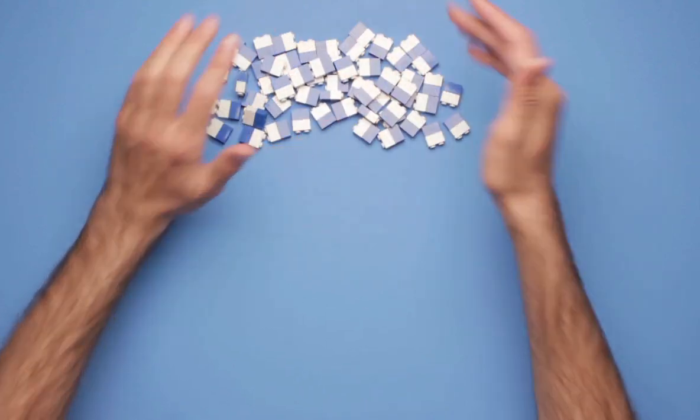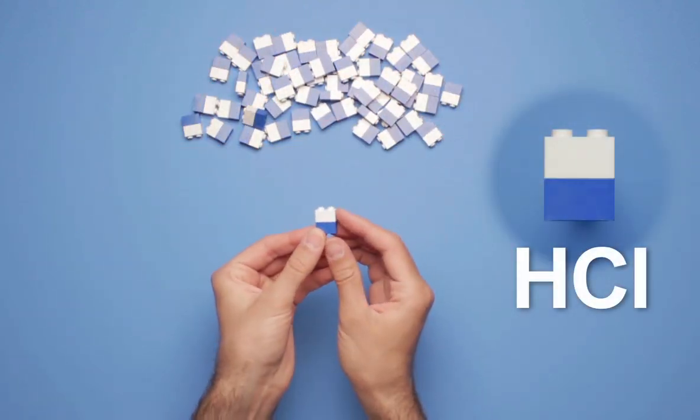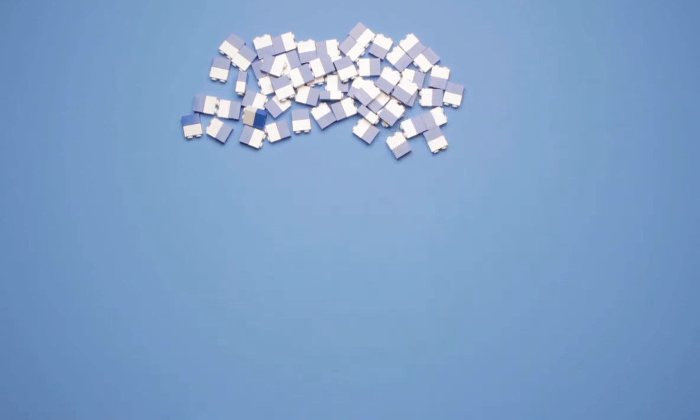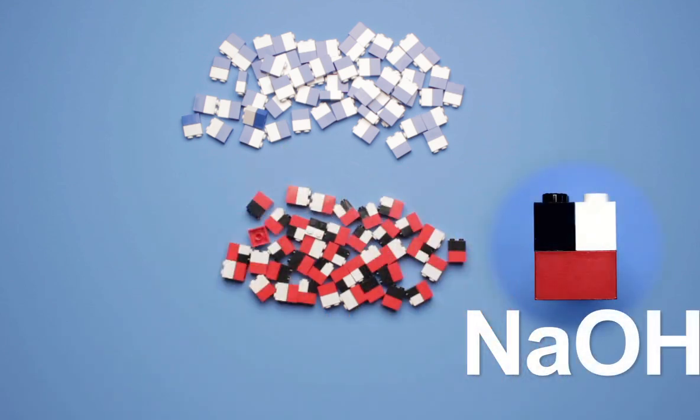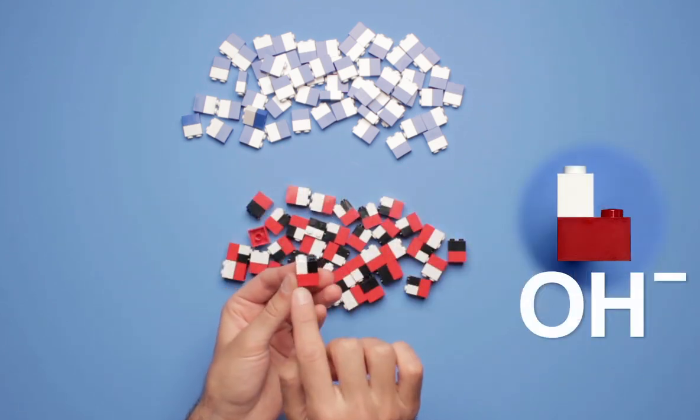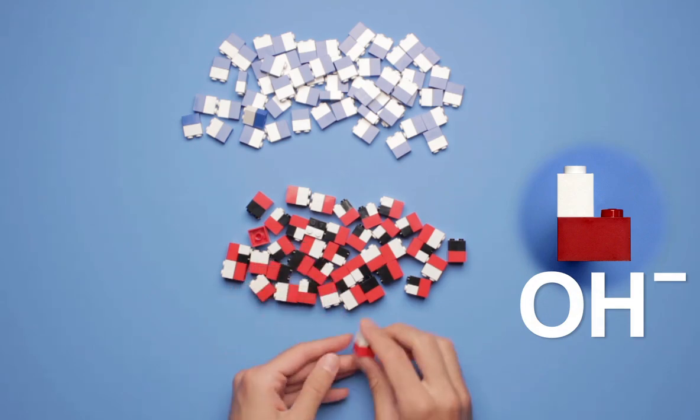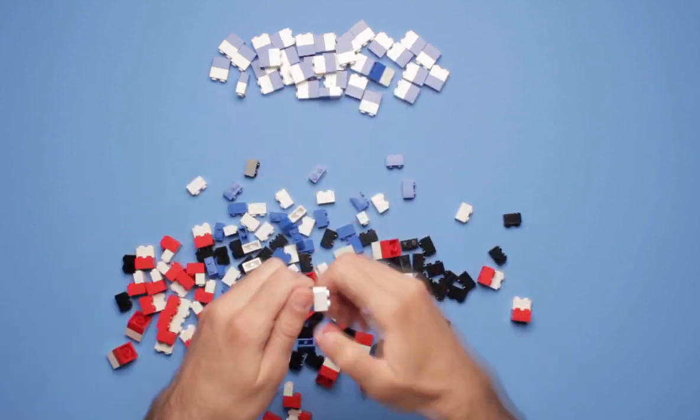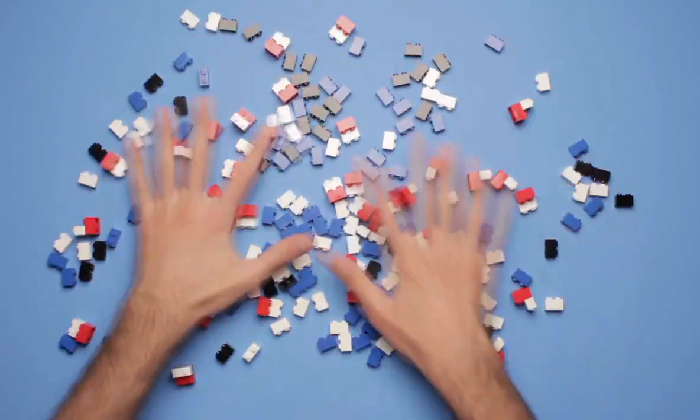Now, should the acid and base be strong or weak? Let's start simple and make them both strong. So, our acid could be hydrochloric acid, and our base, sodium hydroxide. Here's 60 HCl molecules. This piece represents the hydrogen ion, and this piece represents the chloride ion. And here are 40 sodium hydroxide molecules. This piece represents the sodium ion, and this piece represents the hydroxide ion. Remember that strong acids and bases dissociate completely in water. So, I'm going to take apart all of these pieces here.